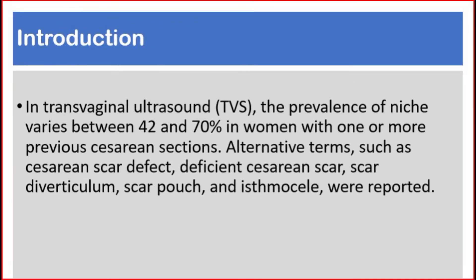On transvaginal ultrasound, the prevalence of niche varies between 42% and 70% in women with one or more previous caesarean sections. Alternative terms such as caesarean scar defect, deficient caesarean scar, scar diverticulum, scar bausch, and isthmocele were reported.